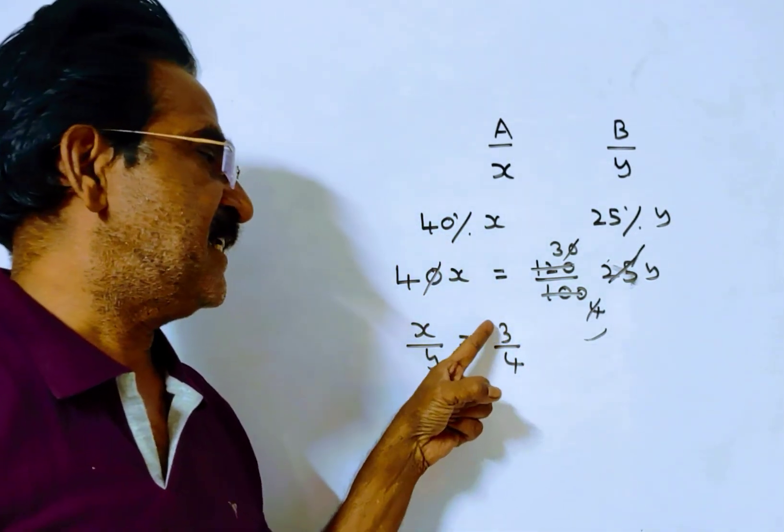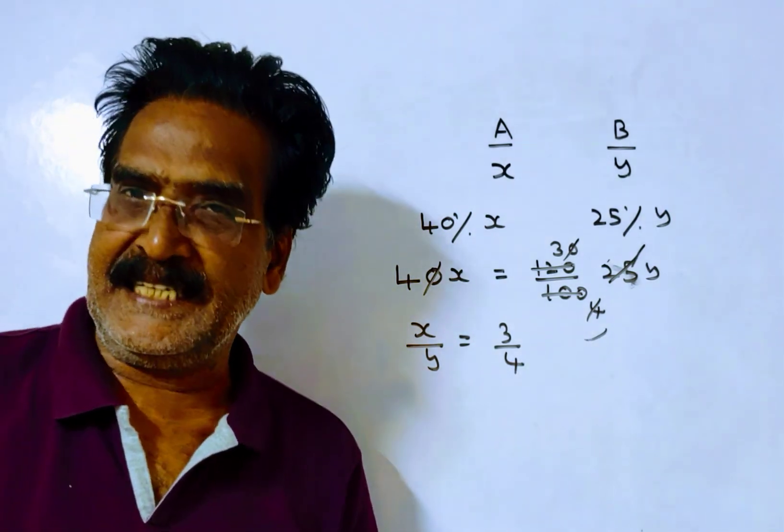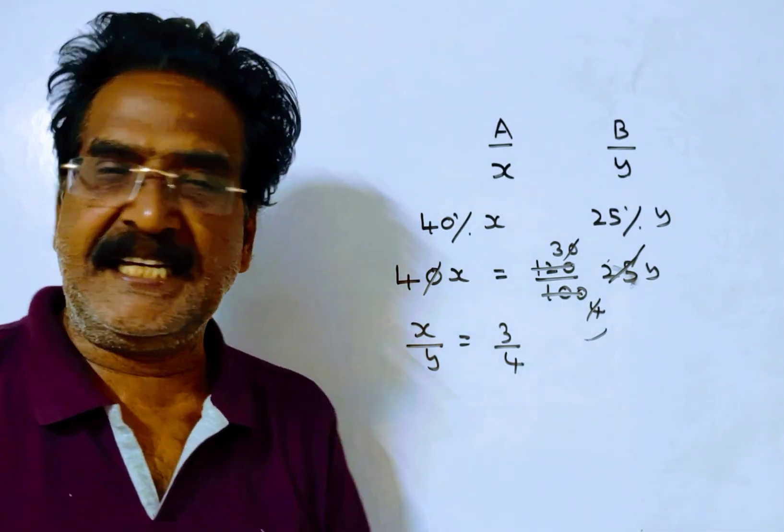Friends, this is A's income. This is B's income. A's income is what percent less than B's income?